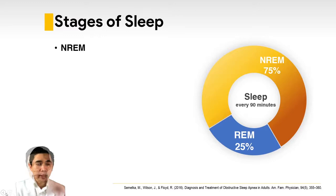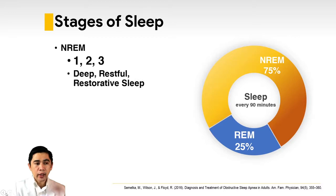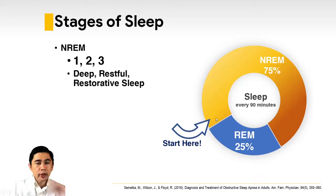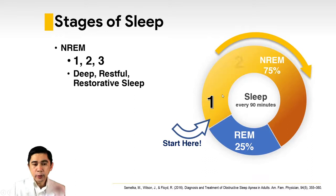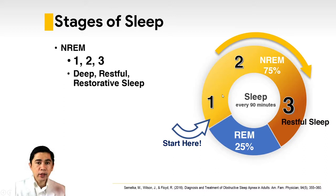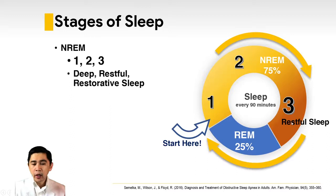Let's talk about the stages of sleep. We have NREM, or Non-Rapid Eye Movement, which is divided into stages one, two, and three. NREM is a phase of sleep which is deep, restful, and restorative. We enter NREM first, starting with stage one, then deeper into stage two, and the deepest is stage three, which is considered the truly restful stage.